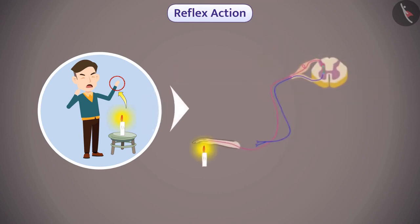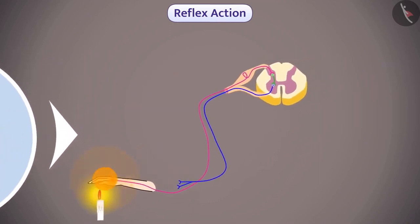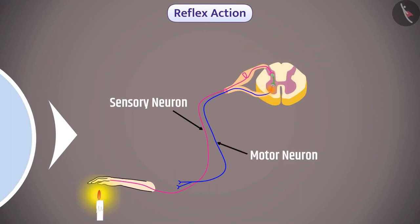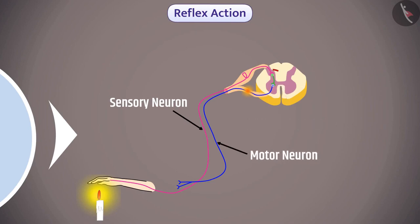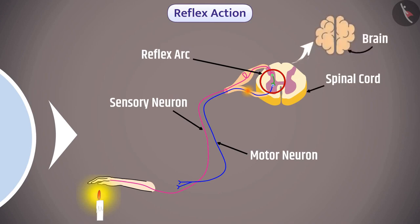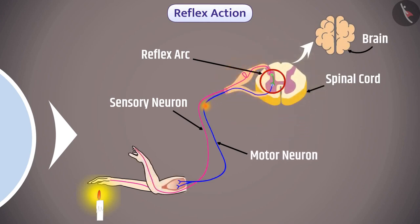During a reflex action, information from receptors in our skin reaches the sensory neuron and is converted into an electrical impulse. This information is transmitted from the sensory neuron to the motor neuron. The connection between a sensory neuron and a motor neuron is called a reflex arc. These reflex arcs are formed in the spinal cord. The motor neuron then transmits the signal to the effector.